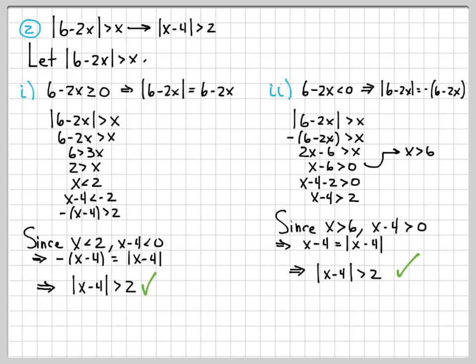So we have case 2 done. In part 2, we've shown that the absolute value of 6 minus 2x greater than x always implies the absolute value of x minus 4 is greater than 2, whether 6 minus 2x is greater than or equal to 0 or less than 0, covering all possible values. Combined with part 1, where we showed the other direction, we have completed the if-and-only-if proof.